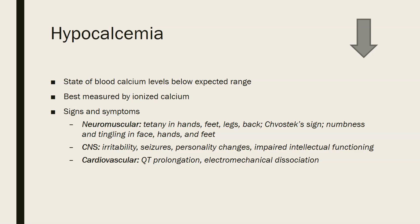Next we have hypocalcemia, which is the state of blood calcium levels being below the expected range — generally levels below 8.6 milligrams per deciliter. Hypocalcemia is best measured using ionized calcium. Signs and symptoms include neuromuscular ones such as tetany in the hands, feet, legs, and back — muscle cramps — along with positive Chvostek's and Trousseau's signs, and numbness and tingling in the face, hands, and feet. CNS symptoms include irritability, seizures, personality changes, and impaired intellectual functioning. Cardiovascular symptoms include QT prolongation on EKG and electromechanical dissociation.